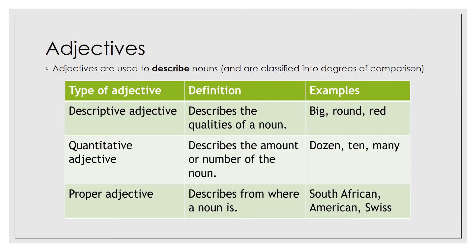Adjectives are used to describe nouns and are classified into degrees of comparison. There are several types of adjectives. The descriptive adjective describes the qualities of a noun — for example, big, round, or red. Quantitative adjectives describe the amount or number of the noun — for example, dozen, ten, many. You also get proper adjectives which describe where a noun is from — for example, South African, American, or Swiss.